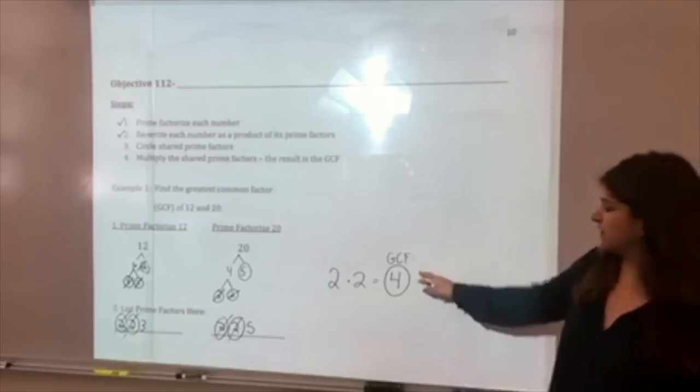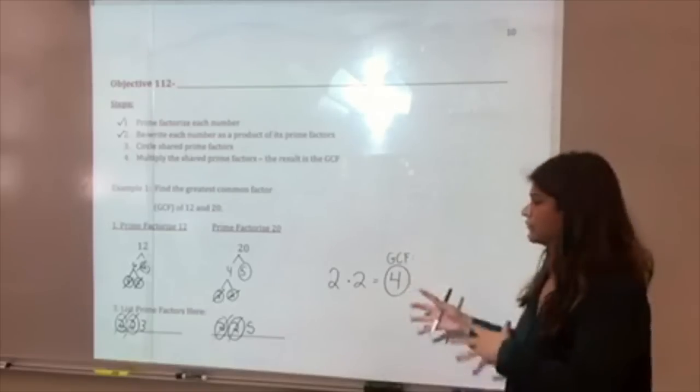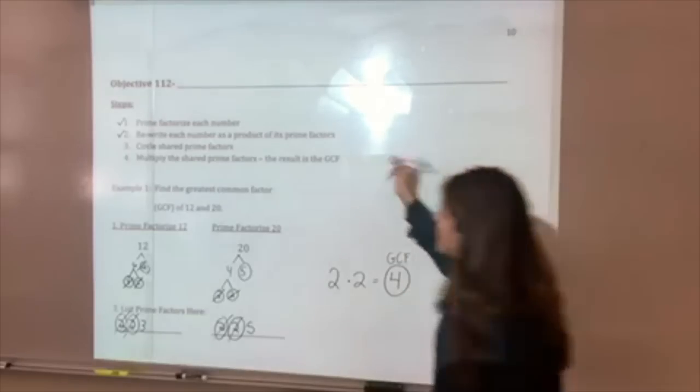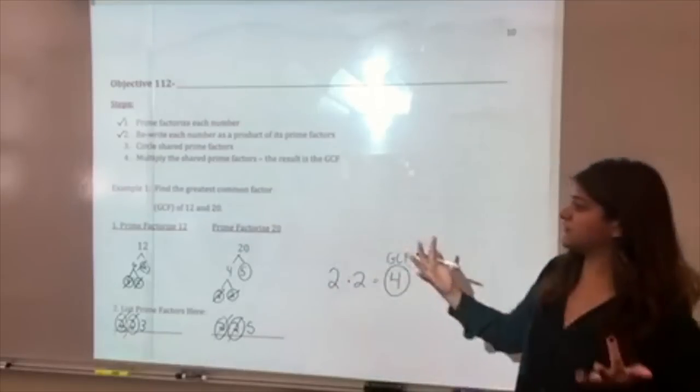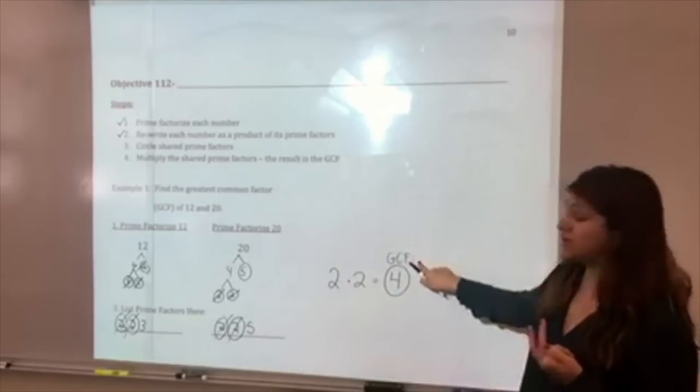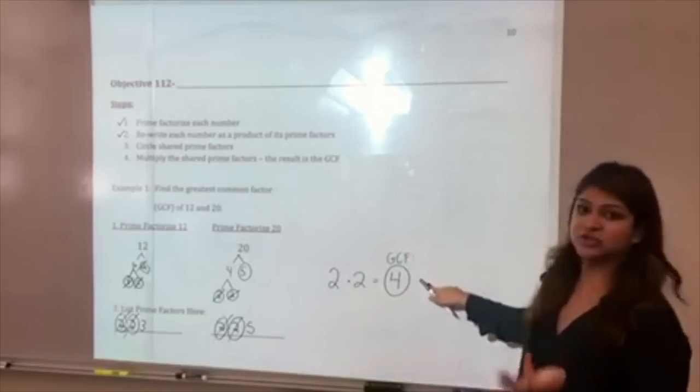When I multiply them, I will get a product of 4, and this will be my GCF. Just so we're double-checking that we're not confusing prime factorization with just finding all the factors, I'm going to go ahead and list out all of the factors of 12 and 20 and see if the greatest common factor is actually 4.